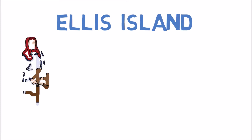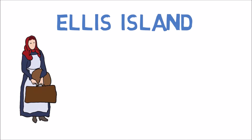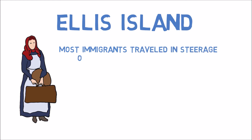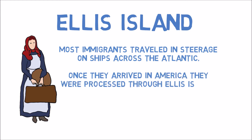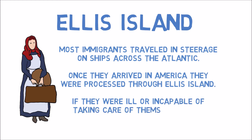Ellis Island. Most immigrants traveled in steerage on ships across the Atlantic. Once they arrived in America, they were processed through Ellis Island. If they were ill or incapable of taking care of themselves, they were sent back.